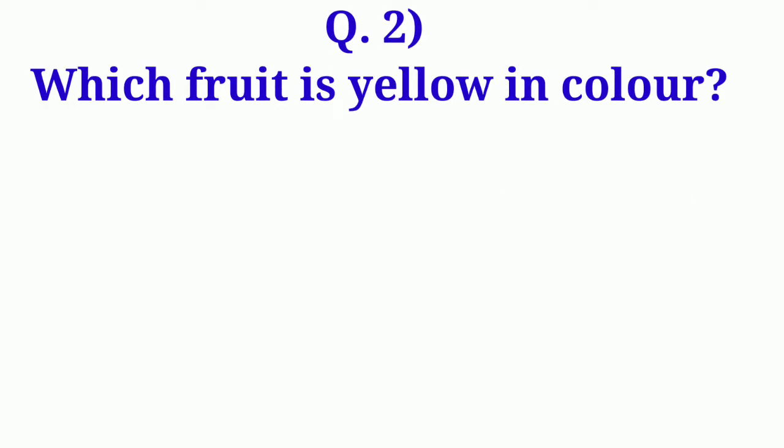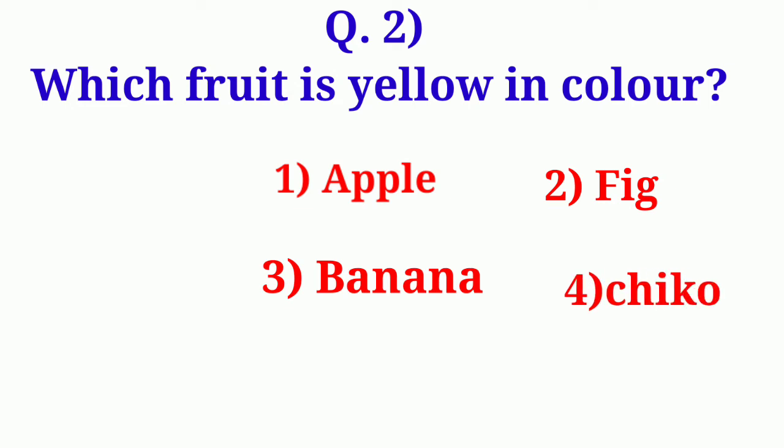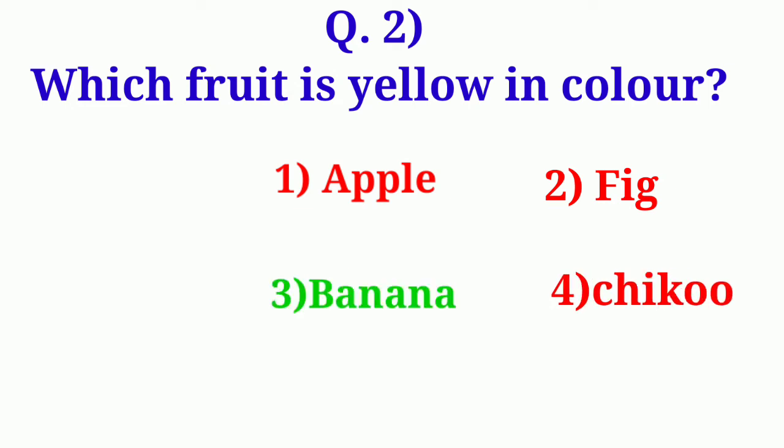Which fruit is yellow in color? Options are, Apple, Fig, Banana, Chiku. Right answer is Banana.